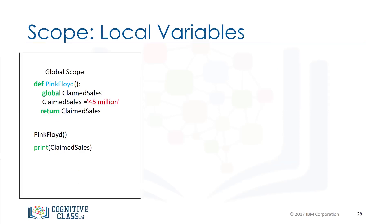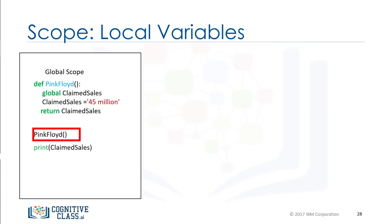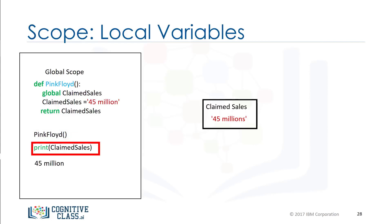Consider the function pink_floyd. If we define the variable claimed_sales with the keyword global, the variable will be a global variable. We call the function pink_floyd. The variable claimed_sales is set to the string '45 million' in the global scope. When we print the variable, we get a value of 45 million. There is a lot more you can do with functions — check out the lab for more examples.